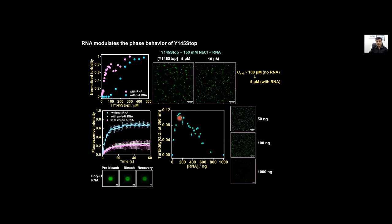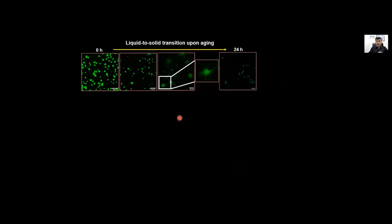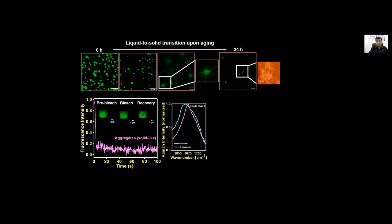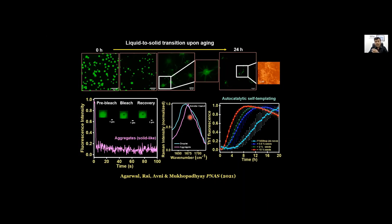If we allow those condensates to age we see a beautiful sea urchin-like morphology indicating fibrous growth from those condensates. If we perform FRAP experiments beyond certain time we don't see any FRAP recovery indicating these are now solid-like aggregates. If you do atomic force microscopy you can see typical amyloid-like fibrils and Raman spectroscopy showed a much sharper amide one band which is due to a cross-beta structure. Therefore there is a conversion from these condensates to highly structured amyloid fibrils.